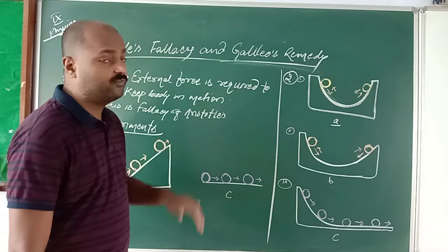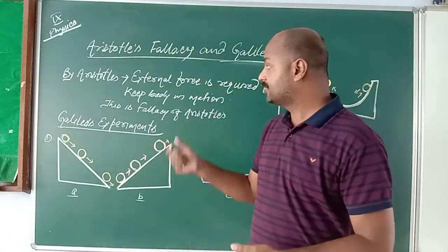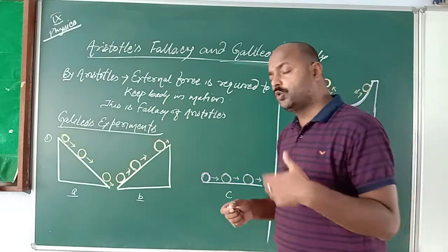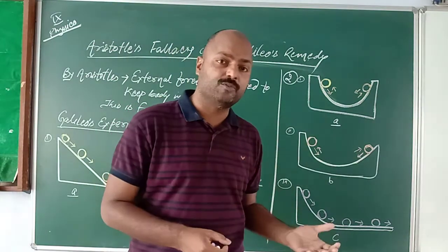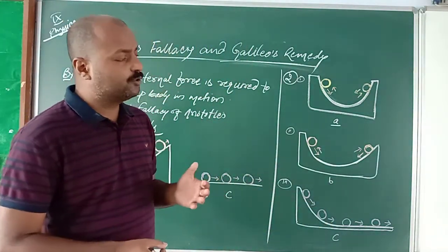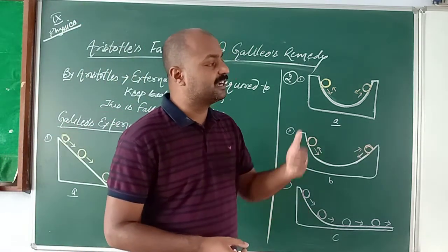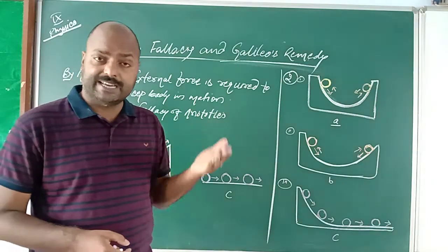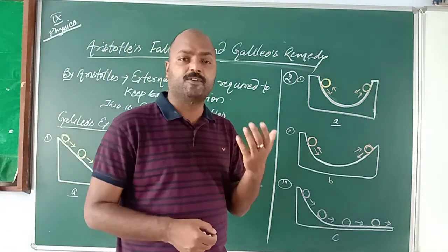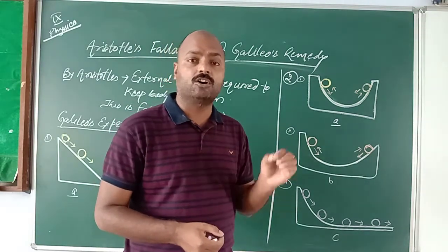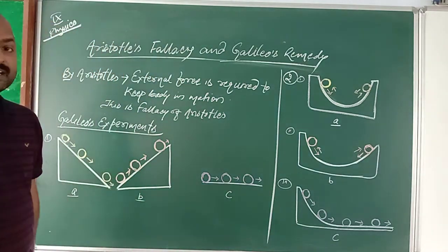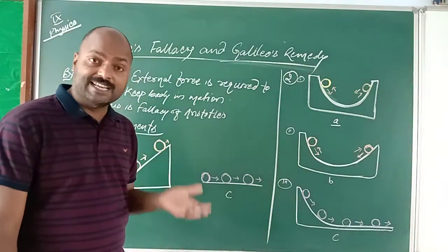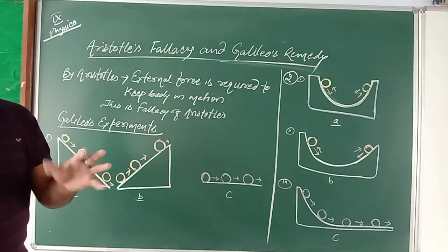This became known as the fallacy of Aristotle — his theory became a failure after Galileo's experiments. When Galileo came, he wanted to show that no, external force is not required to keep a body in motion. We know from class 8 that friction is a type of force that always acts opposite to the direction of motion. Galileo wanted to check whether external force is truly essential to keep a body in motion, so he demonstrated with a set of experiments.